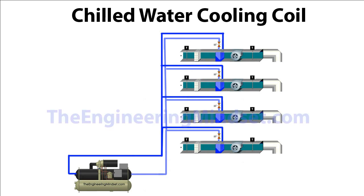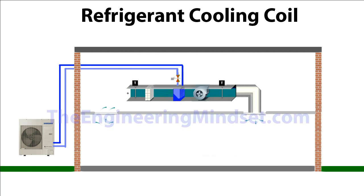The other form of cooling coil is the chilled water cooling coil. From an economical point of view, if you've got multiple AHUs, fan coil units, or a lot of cooling demand on the building, it's probably going to be more economical to have a centralized system rather than a localized direct expansion unit. This setup is more common in very large buildings, whereas the DX setup is much more common in shops or small sites and buildings.